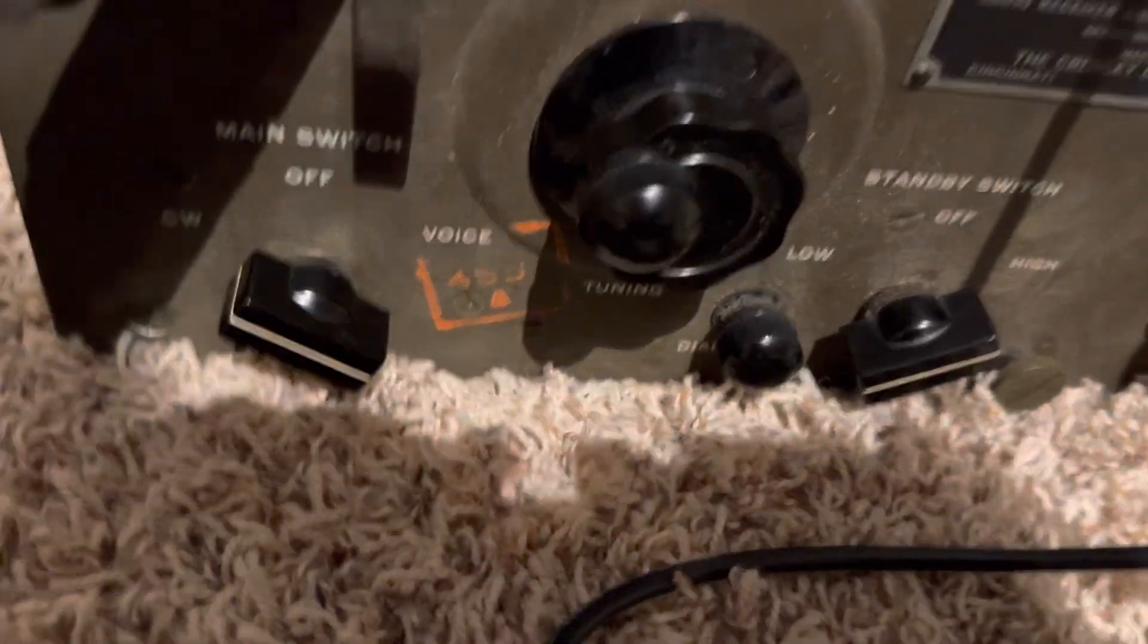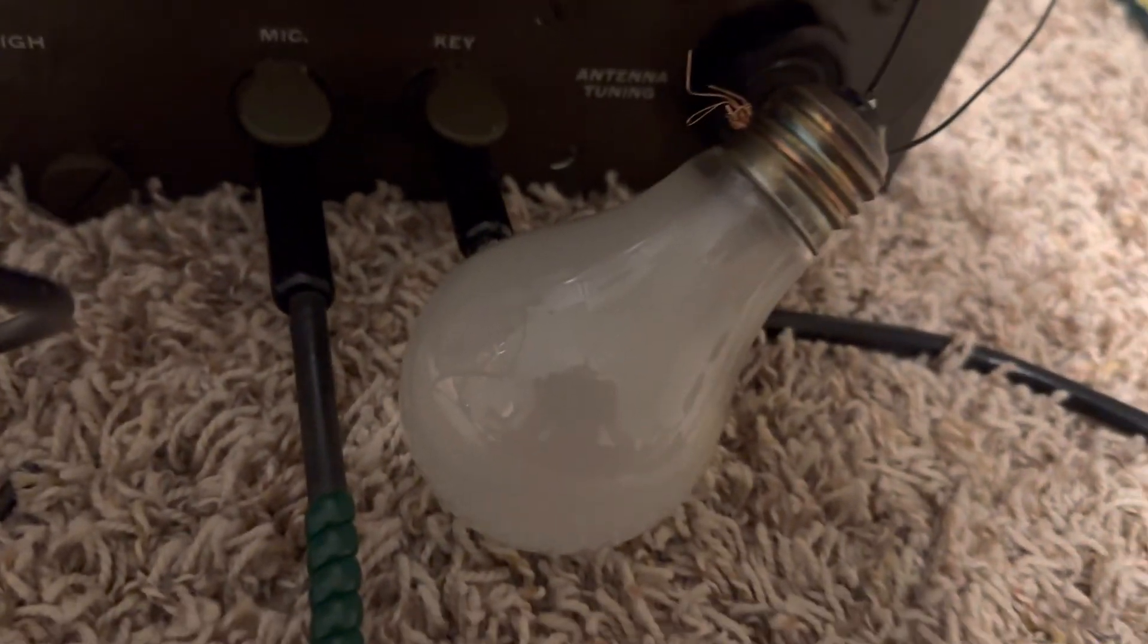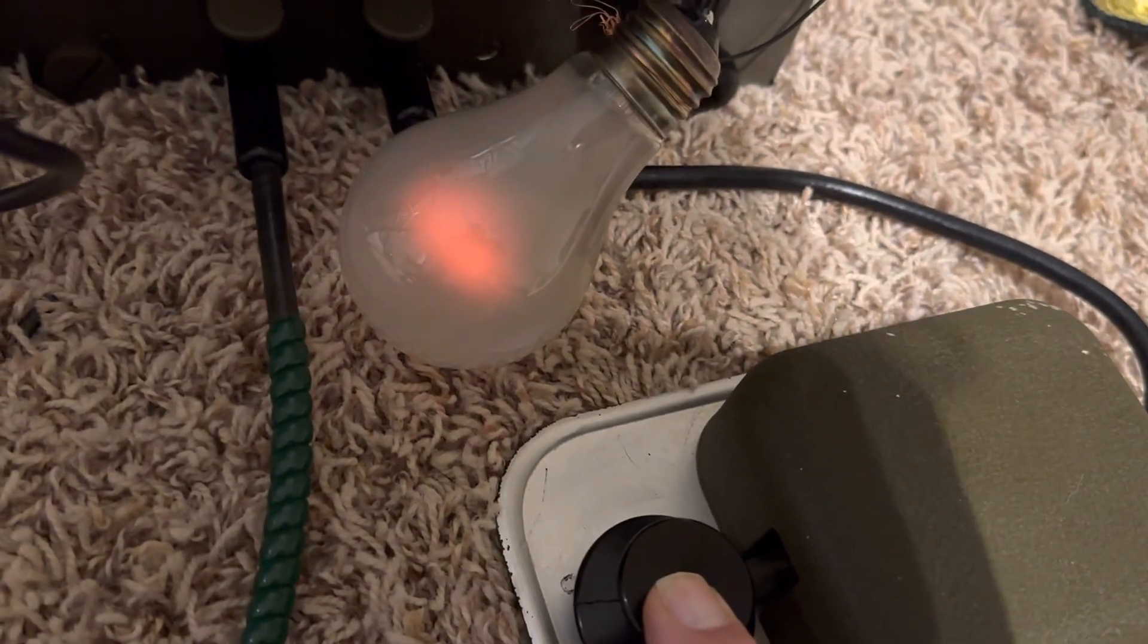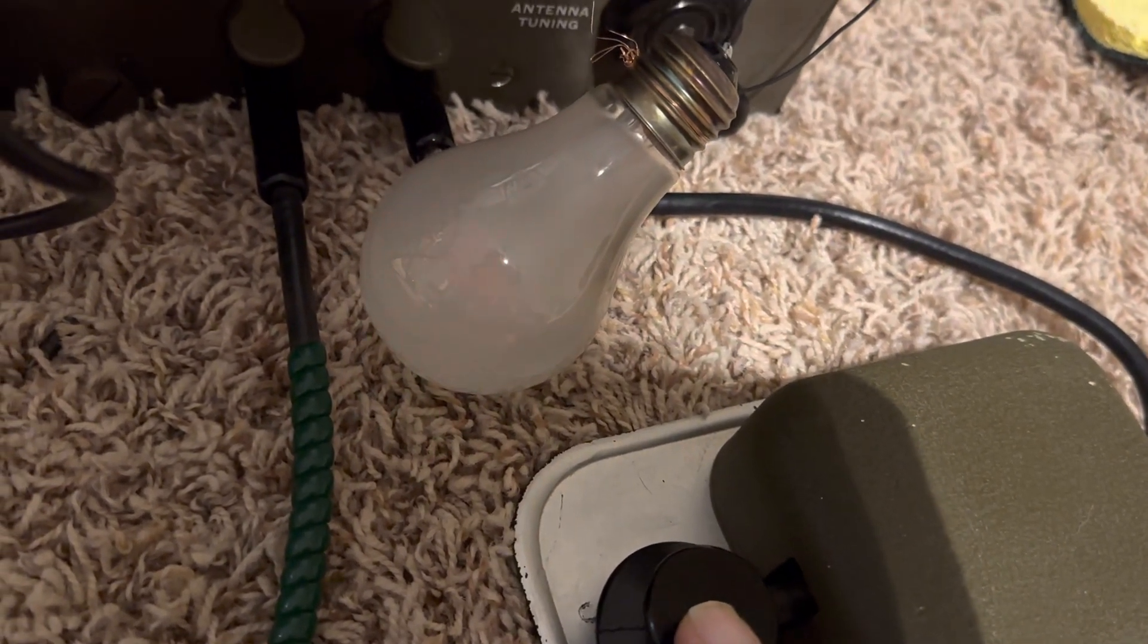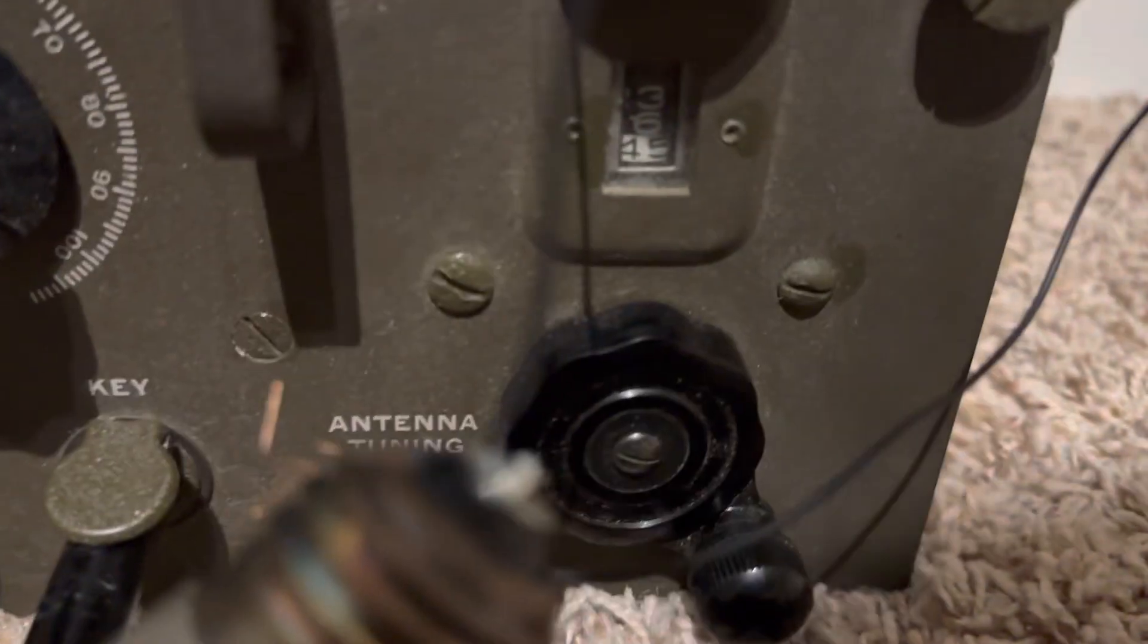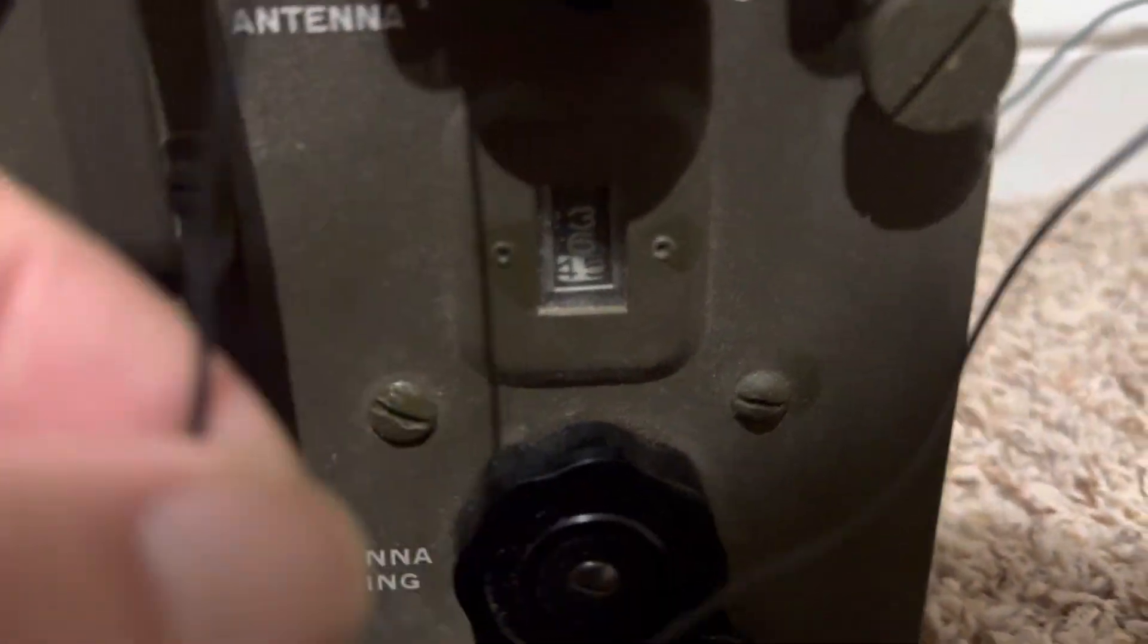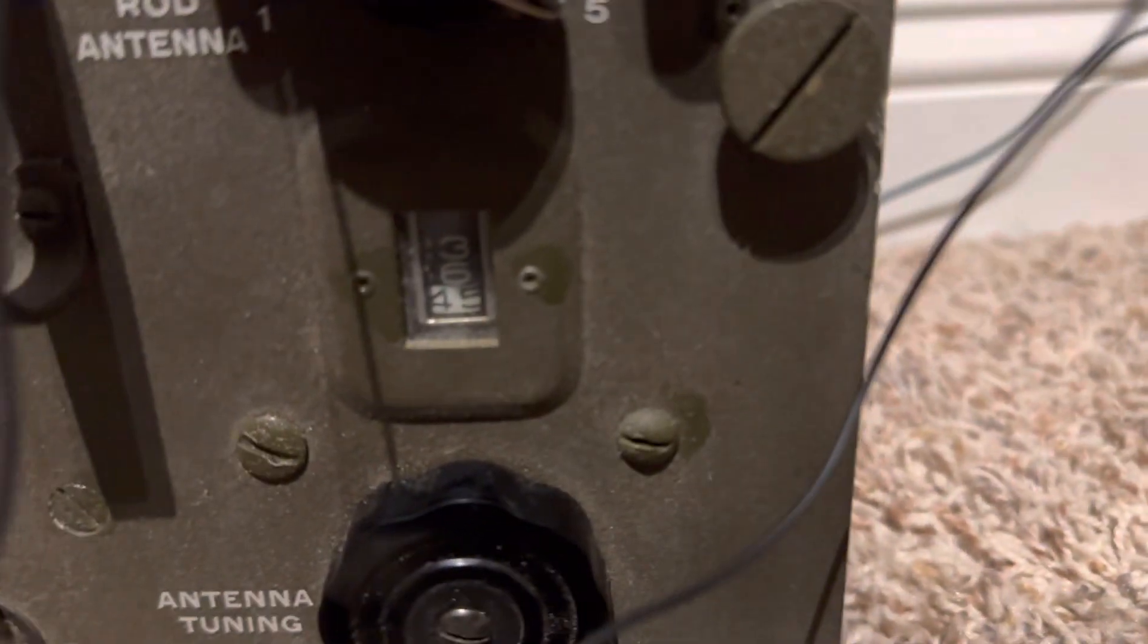But on CW I can key here and it will transmit. There's a little bit of power coming out. So if you watch the bulb here when I key the transmitter, there's a wee bit of power there. And I'm on the highest position here and that's the setting of the antenna tuner.